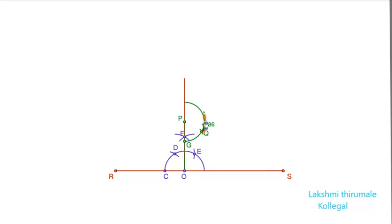Now with center as Q and keeping the same radius, draw another arc. Mark the point of intersection of these two arcs as B.